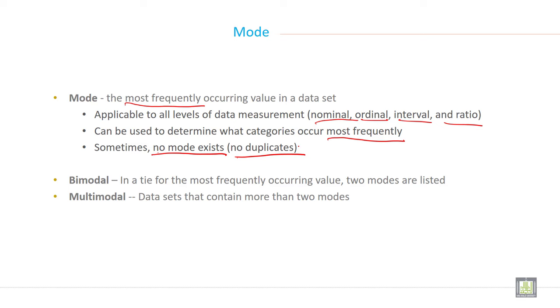Maybe sometime, bimodal exists. Bimodal means two mode. What is that case? In a tie for two most frequently occurring value, two mode are listed. When two number repeated same time in given data, then it is called bimodal.